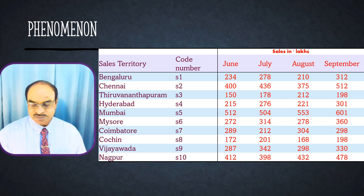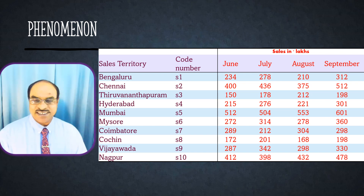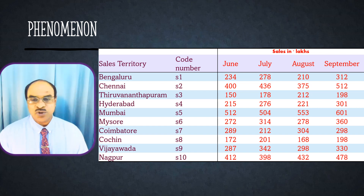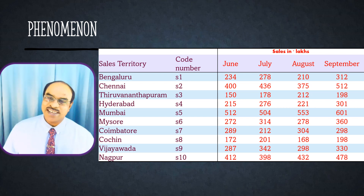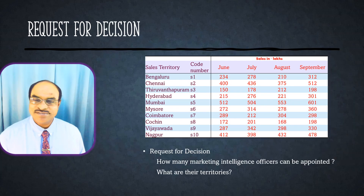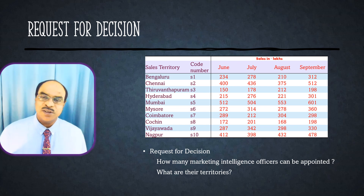This organization has a minimum of two sales territories in two different places in a particular state. For example, in Karnataka the sales territory is located in Bangalore as well as in Mysore. Let us see what request has come from the marketing officer for the purpose of solving this problem.